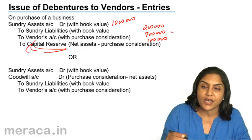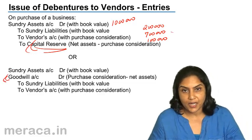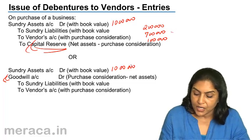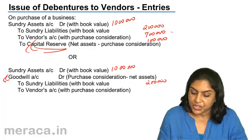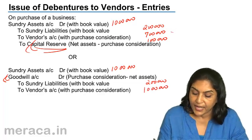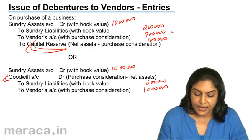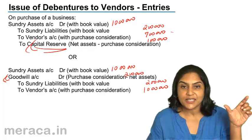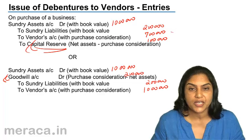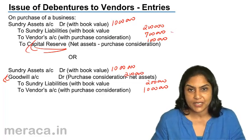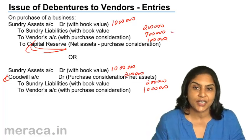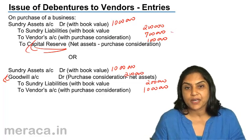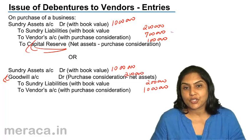Any difference is either credited to the Capital Reserve account or debited to the Goodwill account. So in this particular case, if we take sundry assets of 10 lakhs and sundry liabilities of 2 lakhs, but the purchase consideration was actually 10 lakhs — we paid 10 lakhs for net assets of 8 lakhs — then the balancing figure: if it is to be credited, it would be credited to Capital Reserve; if it is to be debited, we debit it to Goodwill.